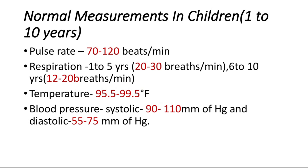So the respiration of a child in the age group between 1 to 5 years: the normal respiration is 20 to 30 breaths per minute. If the child is between 6 to 10 years, the normal respiration rate would be 12 to 20 breaths per minute.